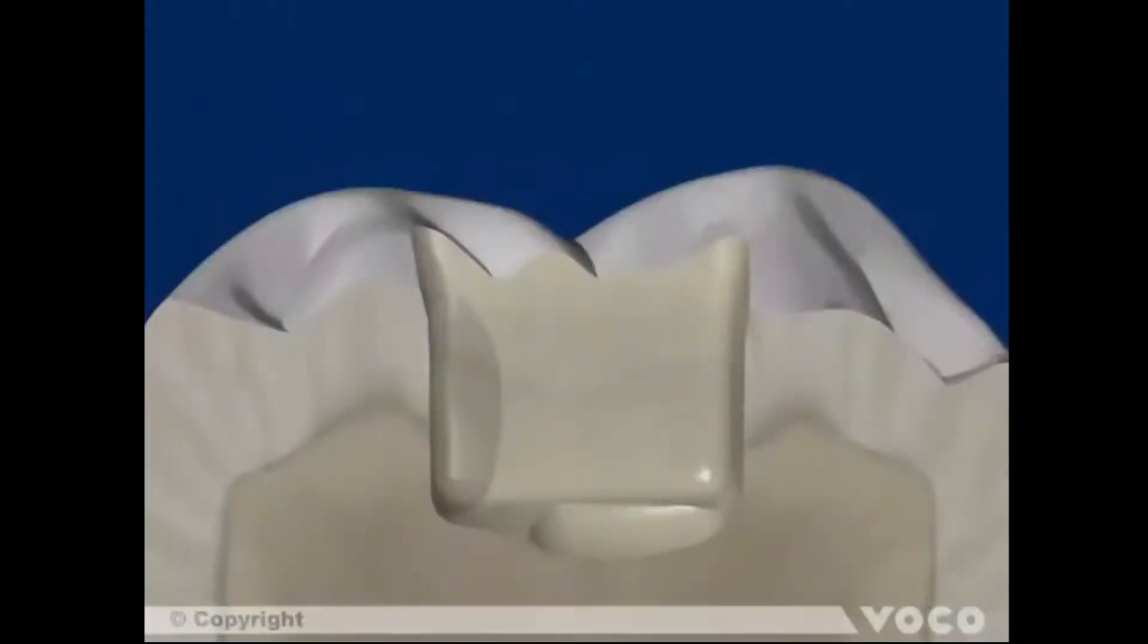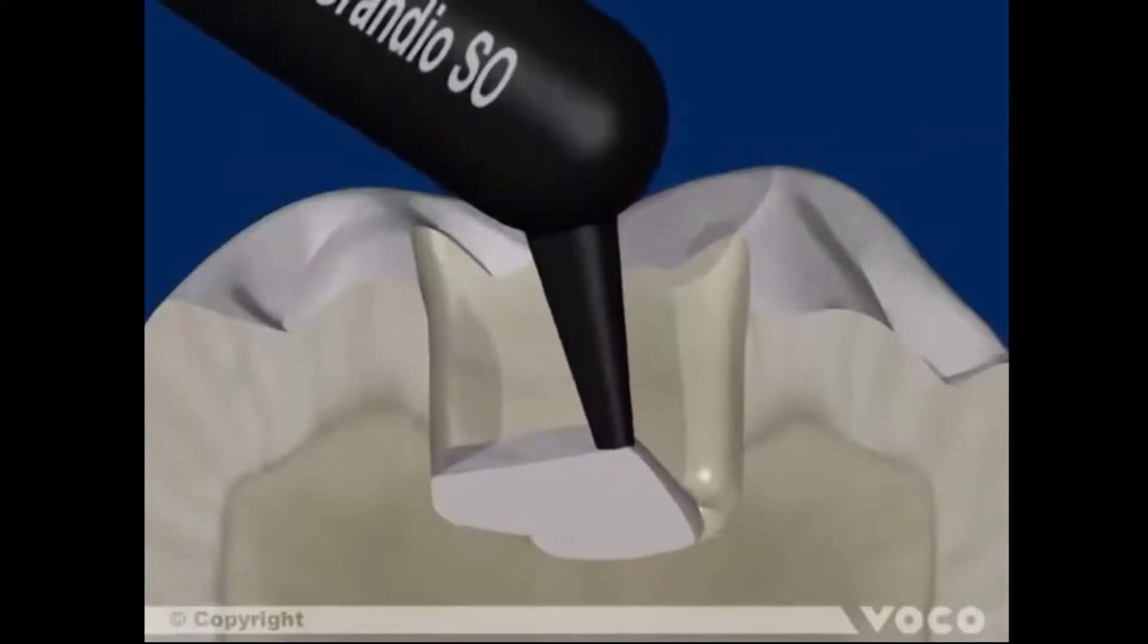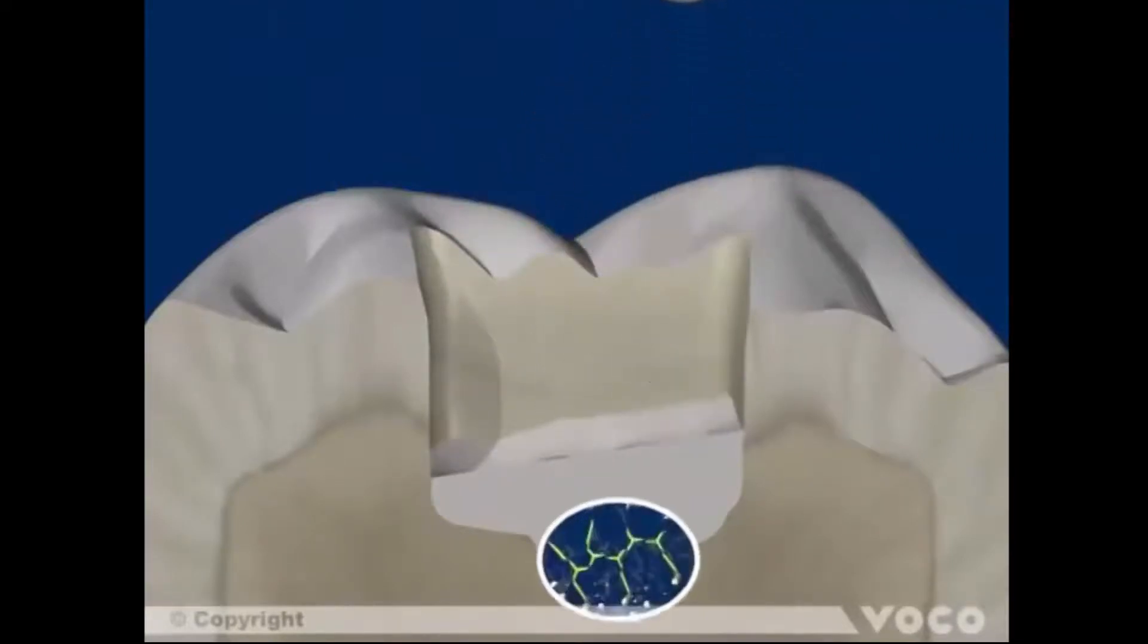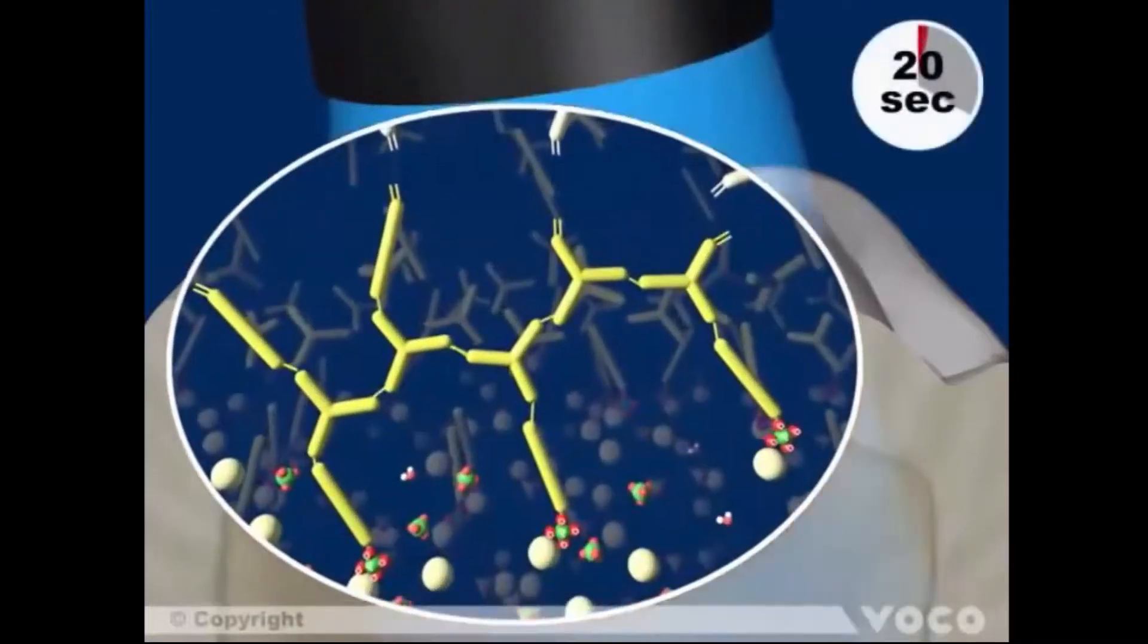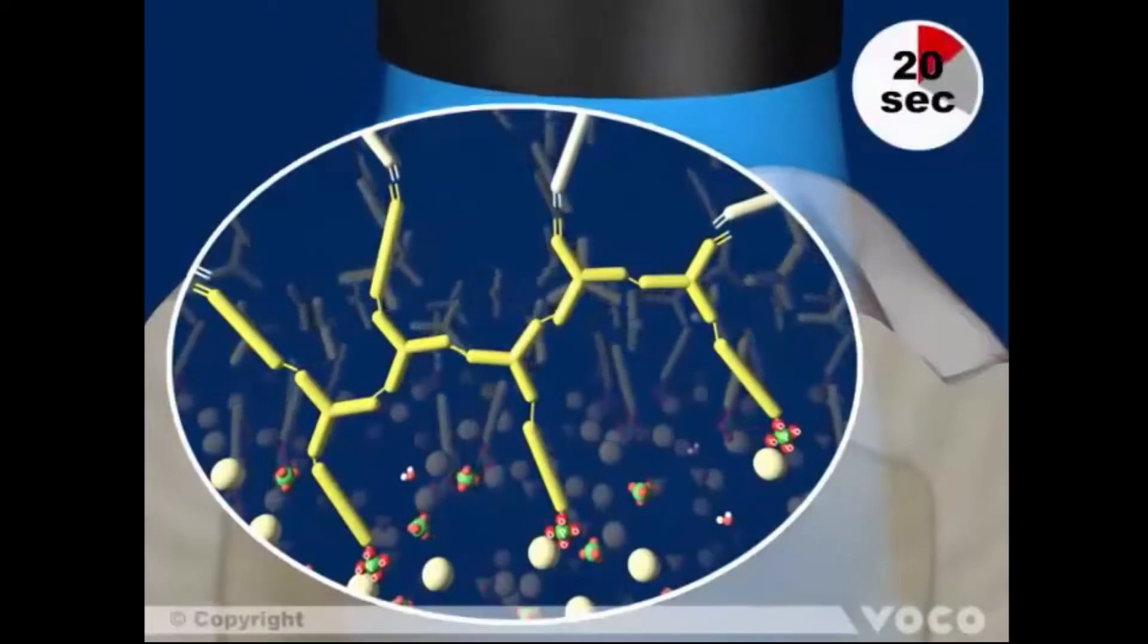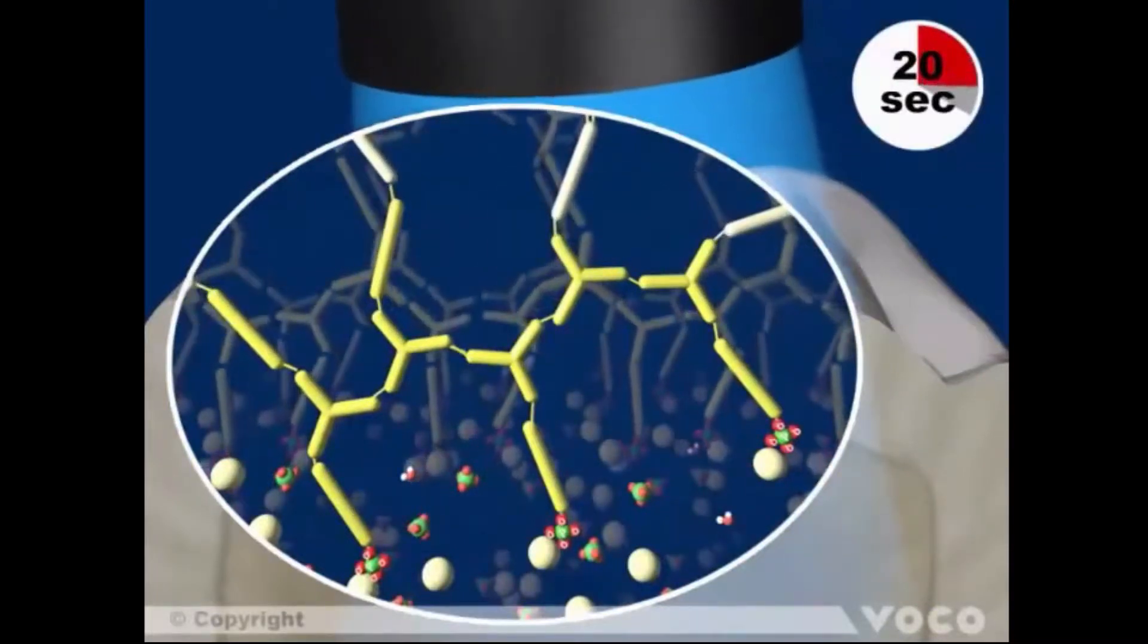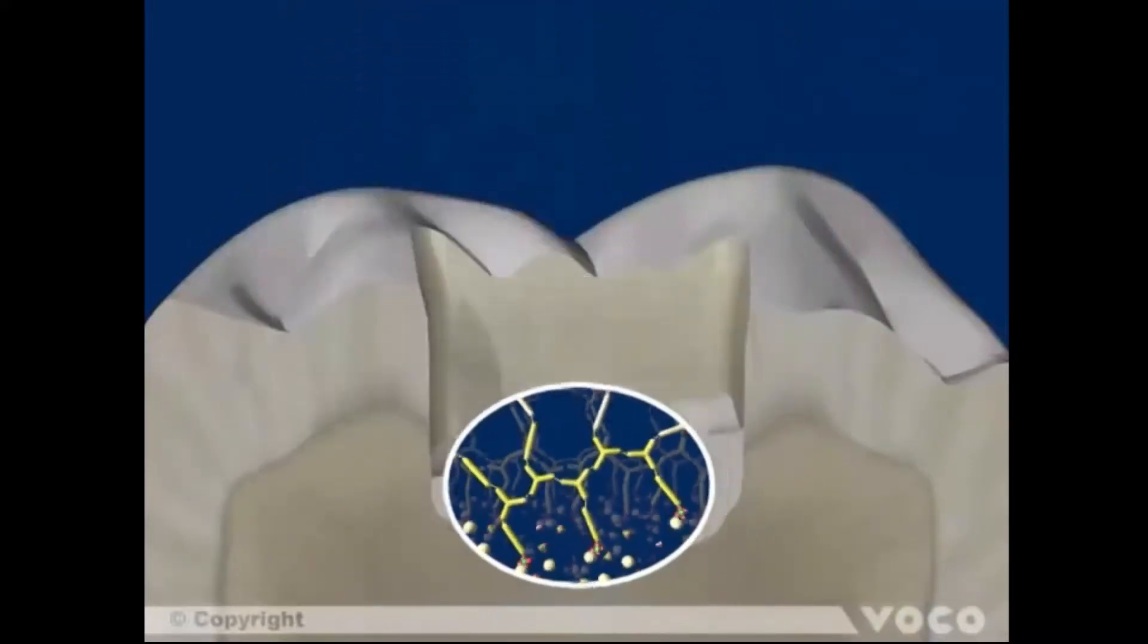After completing the very important adhesive application, a light curing filling material is applied in increments into the cavity. During the process of light curing this material, the adhesive connects by using its hydrophobic part with its free double bonds and with the free double bonds of the composite simultaneously. By adhering to the necessary light specifications and polymerization time, a strong adhesion is achieved between adhesive and composite material.